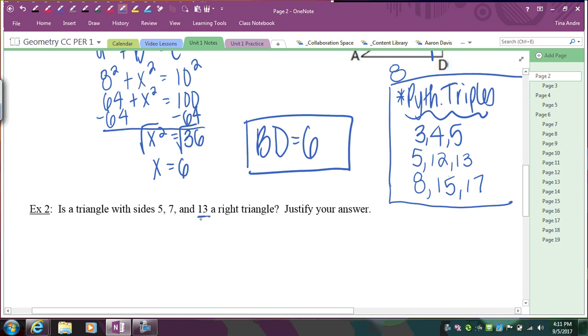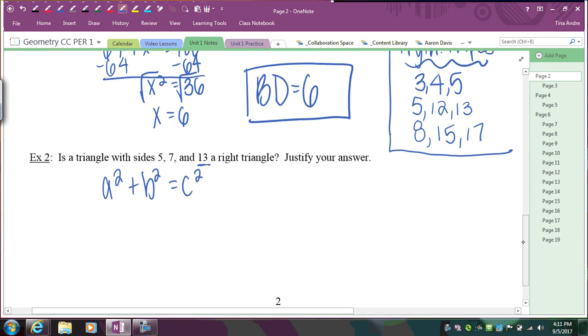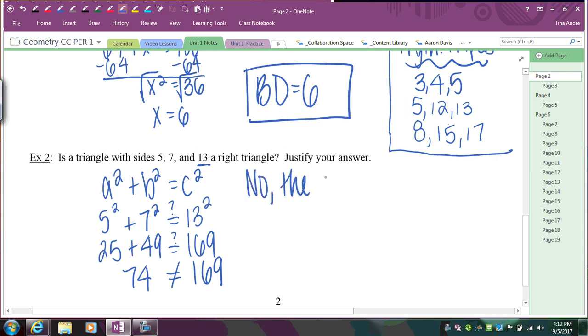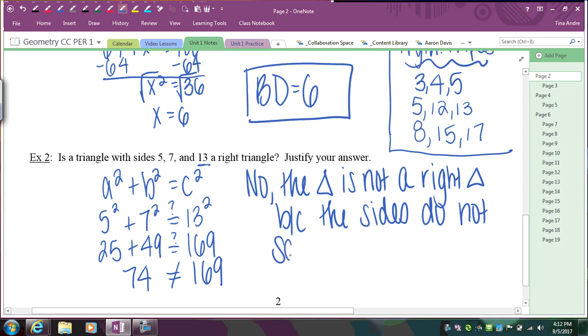So the longest side is 13. That has to go in for C. So what I'm going to do is I'm going to plug into the Pythagorean Theorem, and I'm going to see if these numbers satisfy it. So if I plug in 5, so 5 squared plus 7 squared, I'm going to see if this equals 13 squared. So I put a question mark above the equal sign, because I want to see if it actually works. So 25 plus 49, I want to see if that equals 169. You add these up, we get 74. That does not equal 169. So these side lengths do not form a right triangle. So I would say, is a triangle a right triangle? No, the triangle is not a right triangle because the sides do not satisfy the Pythagorean Theorem.